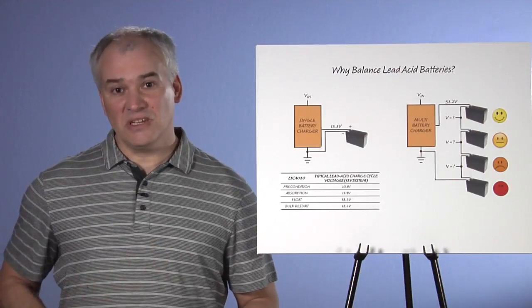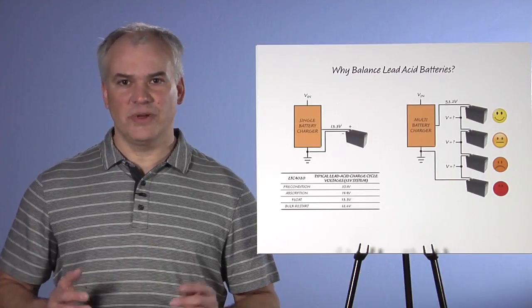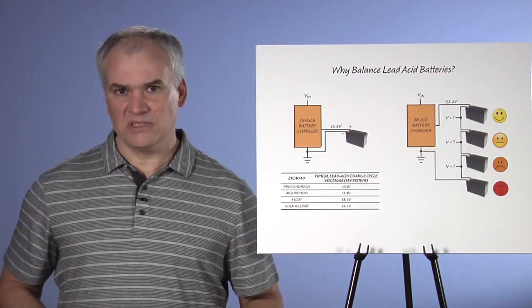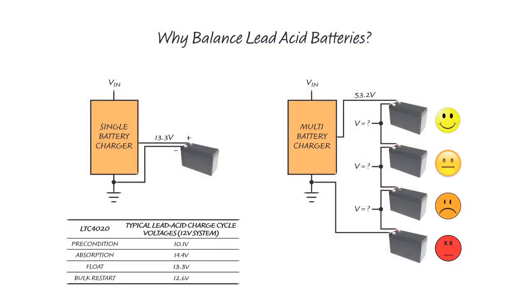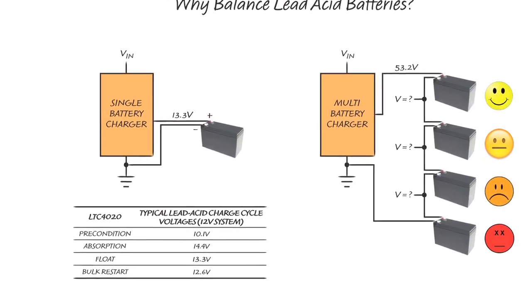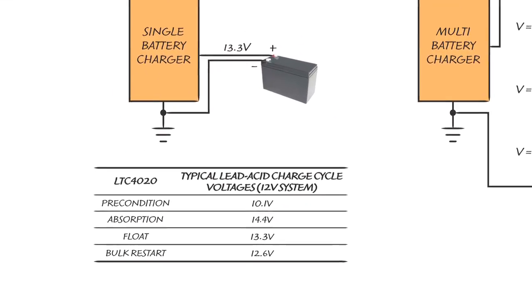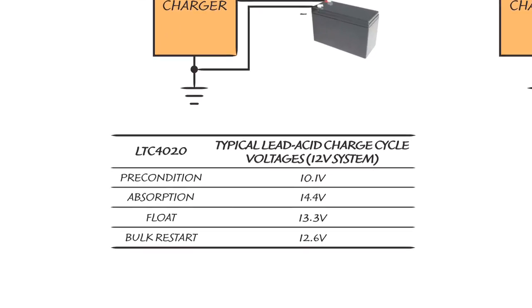In the case of the single lead acid battery, charging or recharging it is straightforward. Charging algorithms make decisions based solely on the battery voltage. The LTC 4020 battery charger IC, for example, is a high-performance solution and operates in the following modes: Precondition, absorption or constant current CC, float or constant voltage CV, and bulk restart. Transitions between modes are made based on the battery voltage.